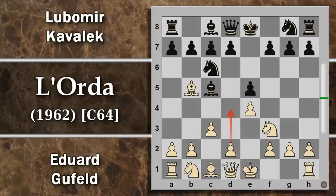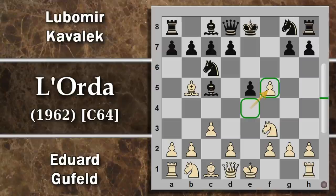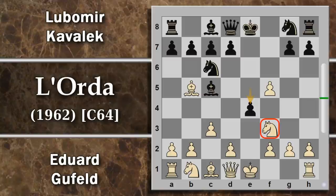Il bianco prosegue con c3, una delle mosse più giocate, con l'idea di spingere d4. Qui si entra in una mossa abbastanza strana: f5, il cosiddetto gambetto Cordel. Perché gambetto? Perché questo pedone è in presa in teoria, però se il bianco prende, dà via un pedone centrale per uno laterale. Questo pedone potrà essere attaccato, per esempio dall'alfiere a campo chiaro, e intanto si può giocare b4 per scacciare il cavallo.